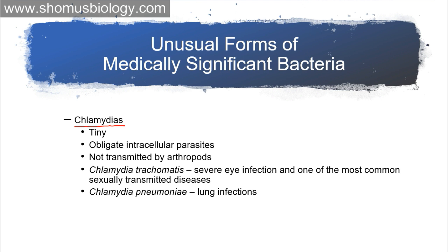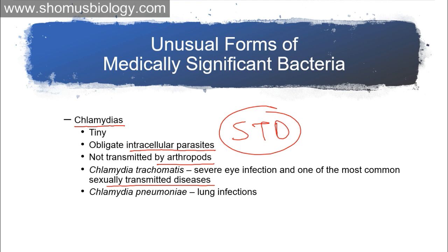Another obligate intracellular parasite is Chlamydia — tiny, and not transmitted by arthropods. Chlamydia trachomatis causes severe eye infection and is one of the most common sexually transmitted diseases, transmitted via sexual transmission, not by vectors like arthropods. Chlamydia trachomatis can also cause congenital infections. Chlamydial pneumonia causes lung infection — pneumonia can also be caused by other bacteria, but Chlamydia can cause it too, complicating things further.